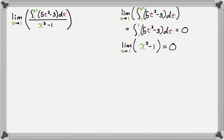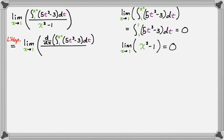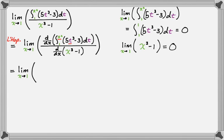This equals by L'Hôpital's rule the limit as x approaches 1 of the derivative of the numerator over the derivative of the denominator. Using the Second Fundamental Theorem, the upper bound is x squared. I replace every t in the integrand with x squared, giving 5(x squared) cubed minus 3, which is 5x to the 6th minus 3. I put that in parentheses and multiply by the derivative of x squared, which is 2x. The derivative of the denominator is simply 3x squared.